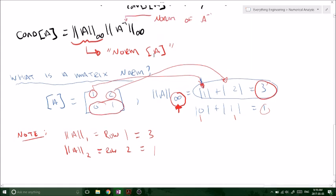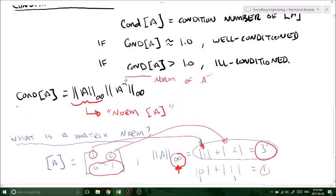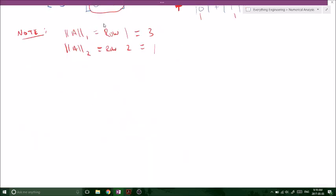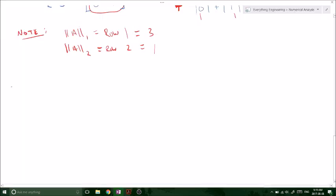So coming back to our condition A equation, all we have to do is find the norm of the matrix A and the norm of the inverse matrix A out of any of the rows because we have the infinity, and multiply them together. So we need to find the inverse of matrix A.